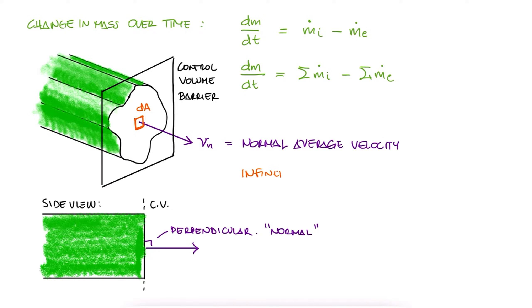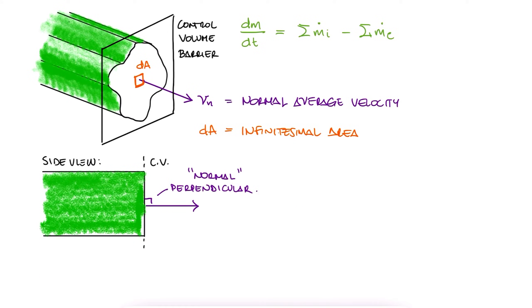For an infinitesimal area dA, the product between it and the normal velocity would result in the infinitesimal volumetric flow rate dV dot.